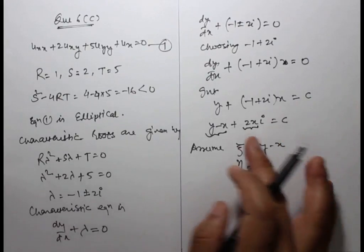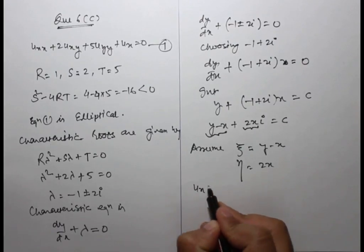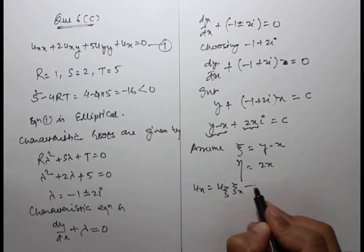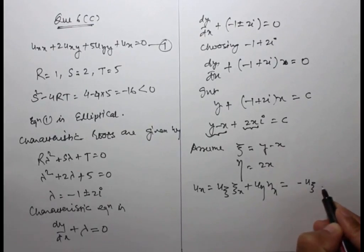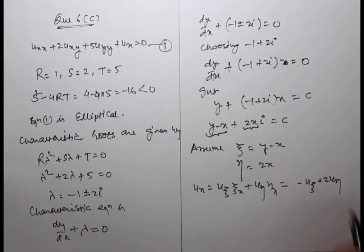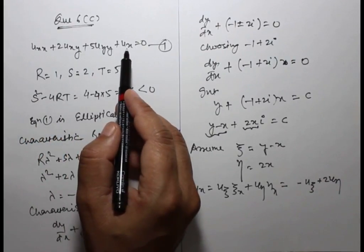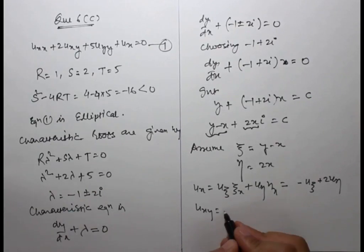Computing ux using chain rule: ux equals uξ·ξx plus uη·ηx equals minus uξ plus 2uη. We now compute uxx, uxy, uyy, and ux for substitution into equation 1.